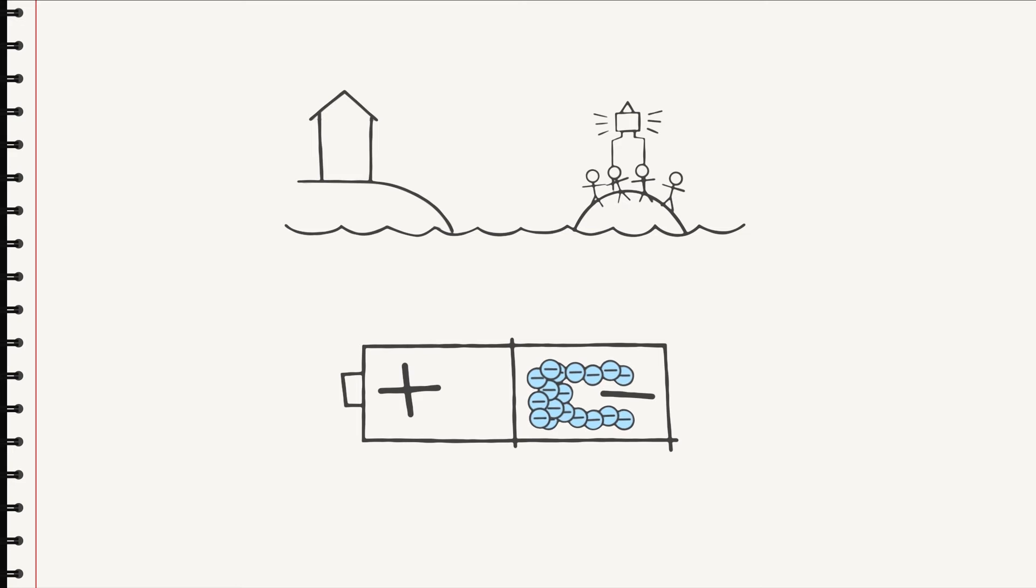The lighthouse, crowded with children, is just like the negative terminal on the battery. And the mainland, where there's plenty of room, is just like the positive terminal of the battery. The electrons, just like the children, are yearning to get from one side to the other.